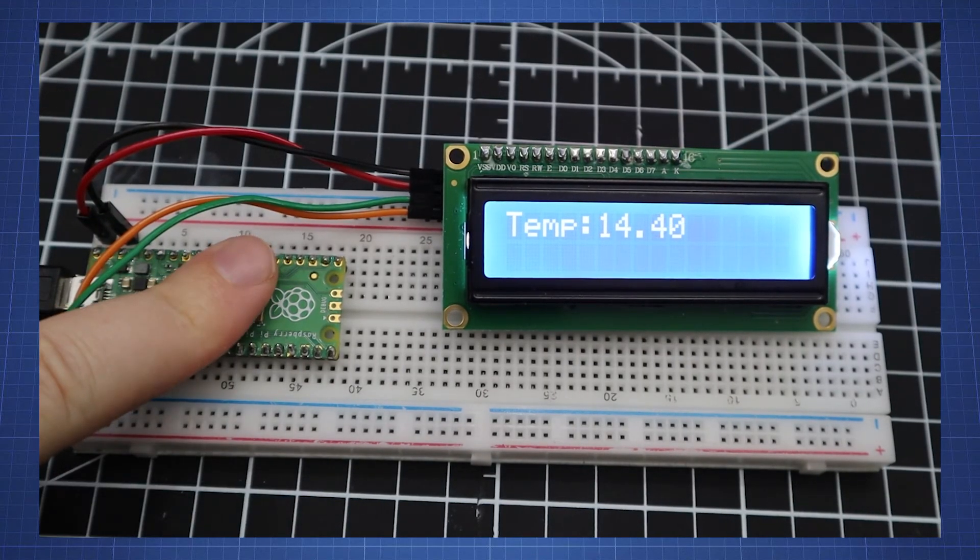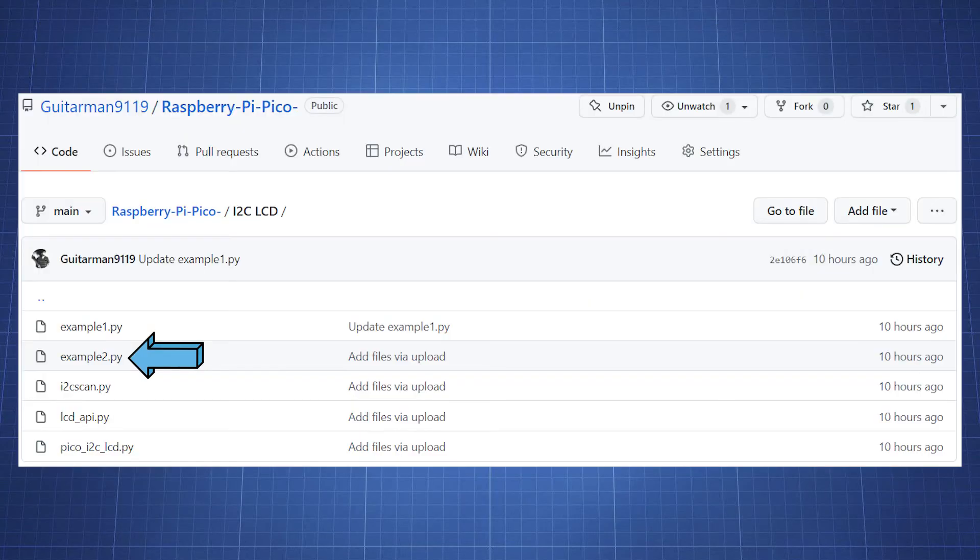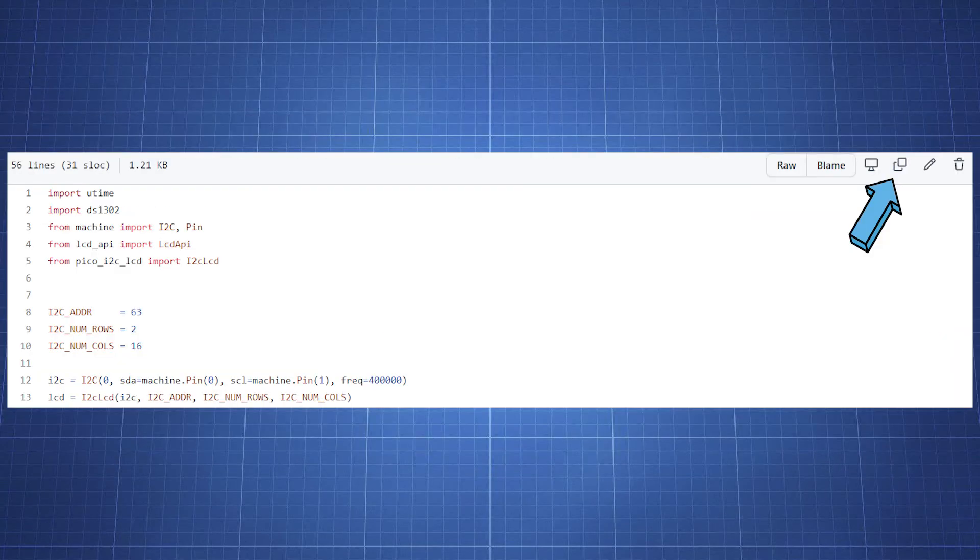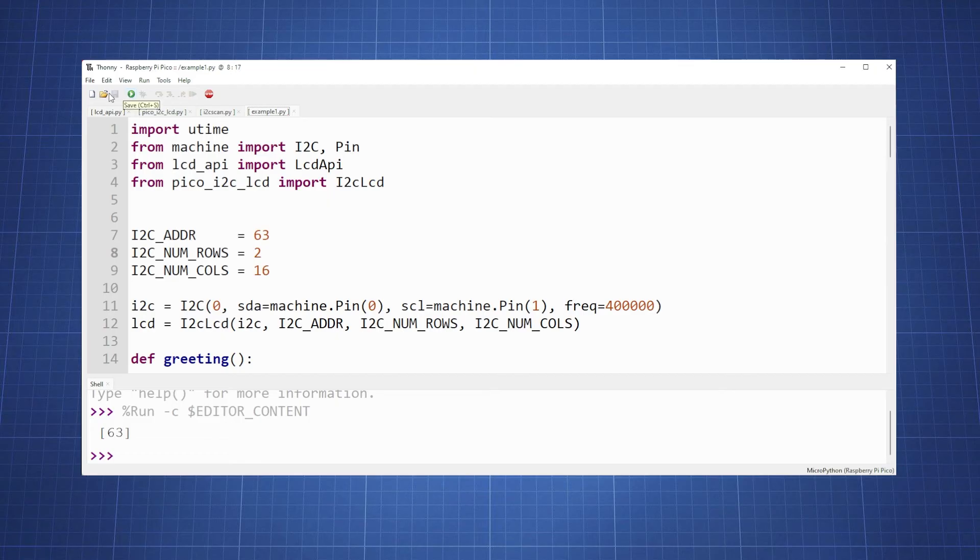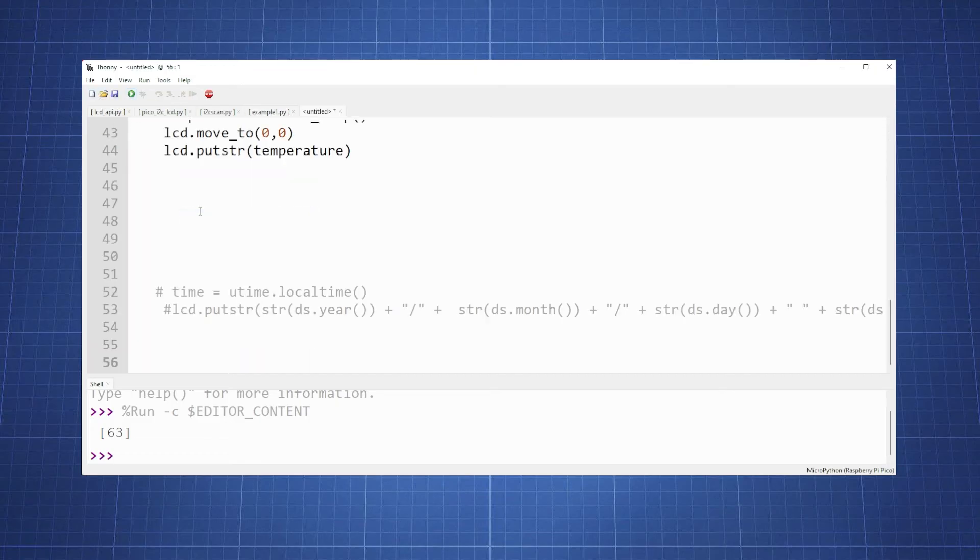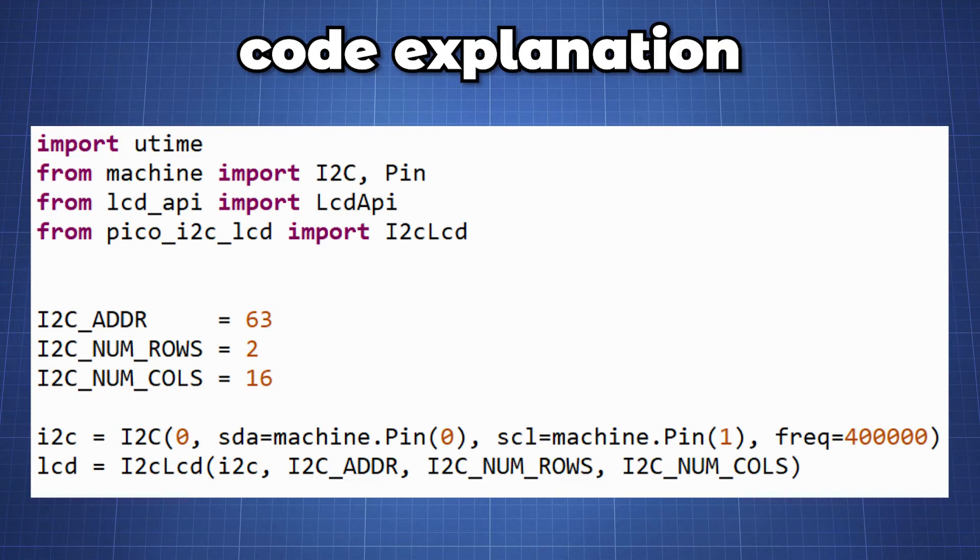In the following example we will look at how to display the onboard temperature sensor of the Raspberry Pi Pico. Open example 2 from my GitHub, copy all the code and create a new file in Thonny and paste the code. A lot of this code comes from my previous tutorial. We will do exactly the same thing, importing the libraries and initializing the I2C and LCD.